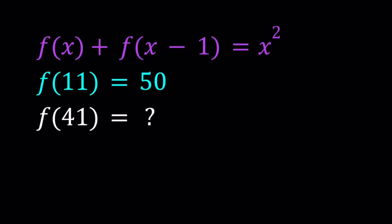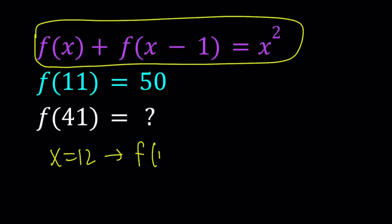Now let's go ahead and start by replacing x with 12. Since we already know f of 11, we can go ahead and use x equals 12 on both sides of this equation. And now that's going to give us f of 12 plus f of 11 equals 12 squared.